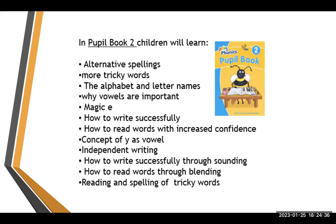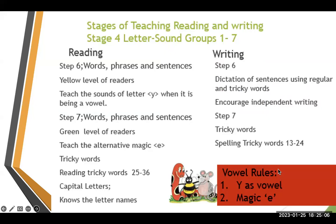In Pupil Book 2, children will learn alternative spellings, more tricky words, alphabet and letter names, why all vowels are important, the magic key concept, how to write successfully, and how to read with increased confidence. They will also develop independent writing through sounding, reading and spelling tricky words, and progress to reading and writing words, phrases, and sentences at the yellow reader level.